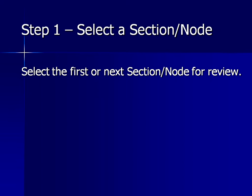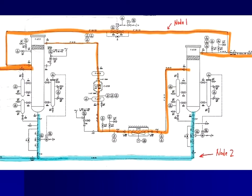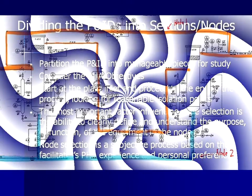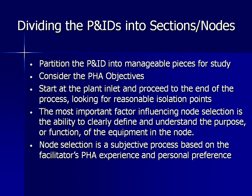The PHA starts by selecting a section or node to review. We highlight each node on the P&ID. For each node, we proceed through the start of the process and then clearly discuss and understand the function or the design. Spend enough time to thoroughly discuss the design, reasons for the design, and the PHA objectives. This is not an opportunity to change the design.